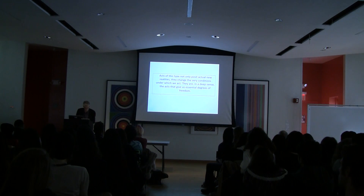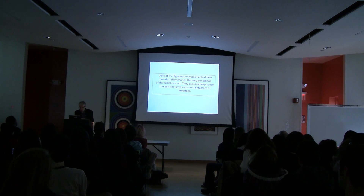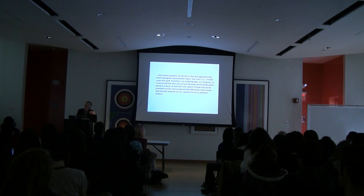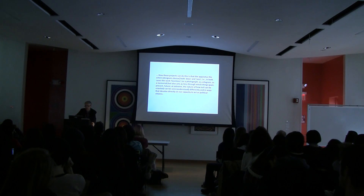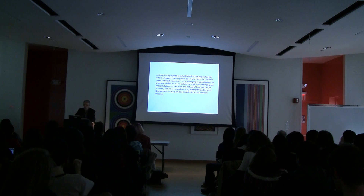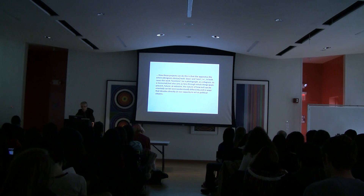So what we have here is a kind of gesture which is ultimately a kind of measuring — a measuring of our existence, addressed to the urgent conditions of our history. How design intervenes in this is by creating new kinds of apparatus — an alternate apparatus that both does and sees. The work functions whether we're talking about a photograph, a diagram, a memorial — it does something, but it also acts as a lens through which things past, present, future, and in this case the nature of how evil can be enacted, can be seen and understood differently — in ways that bear directly on our capacity to act as political citizens.